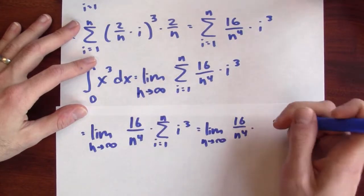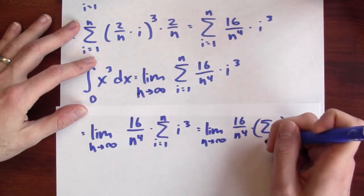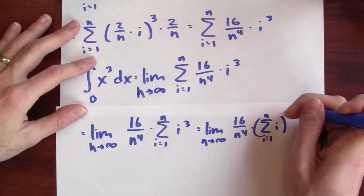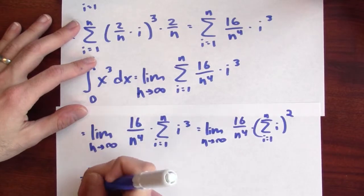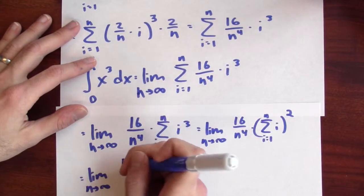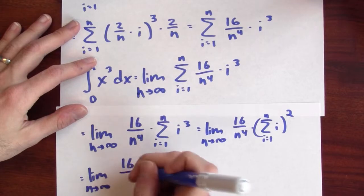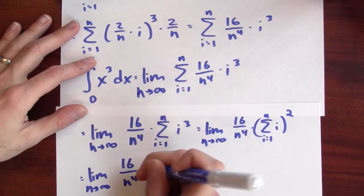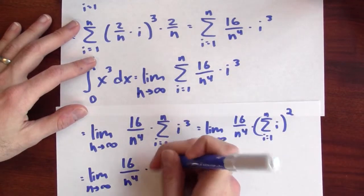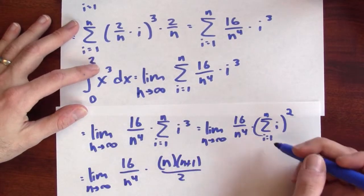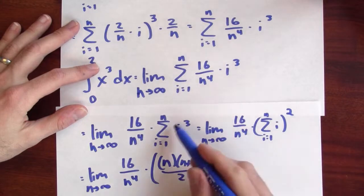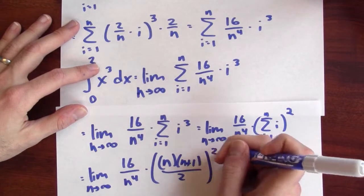And I can use that formula that we got from before. That's the same as the sum of the first n whole numbers squared. And in this case, that's the limit as n goes to infinity of 16 over n to the 4th times n times n plus 1 over 2. That's the sum of the first n whole numbers, and the sum of the first n perfect cubes is that squared.